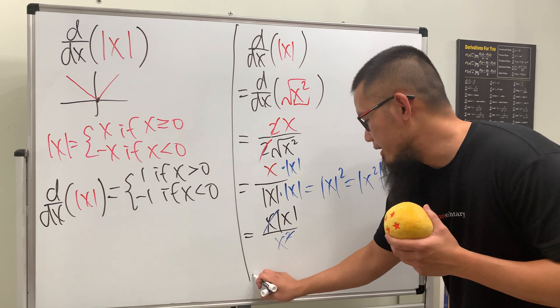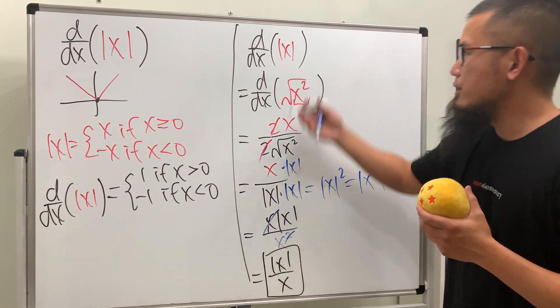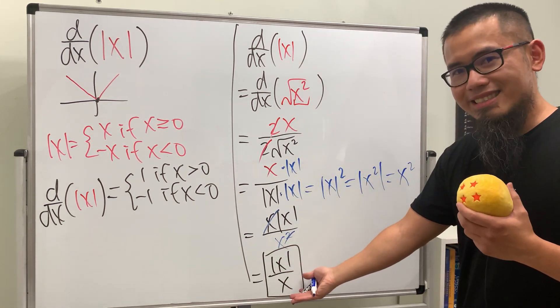So ladies and gentlemen, the answer is just nicely equal to absolute of x over x. This is so cool because we just divide by x.